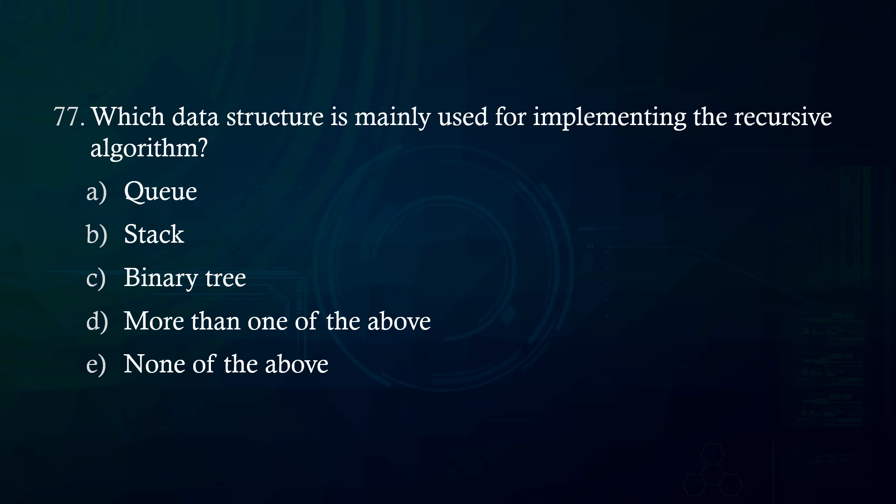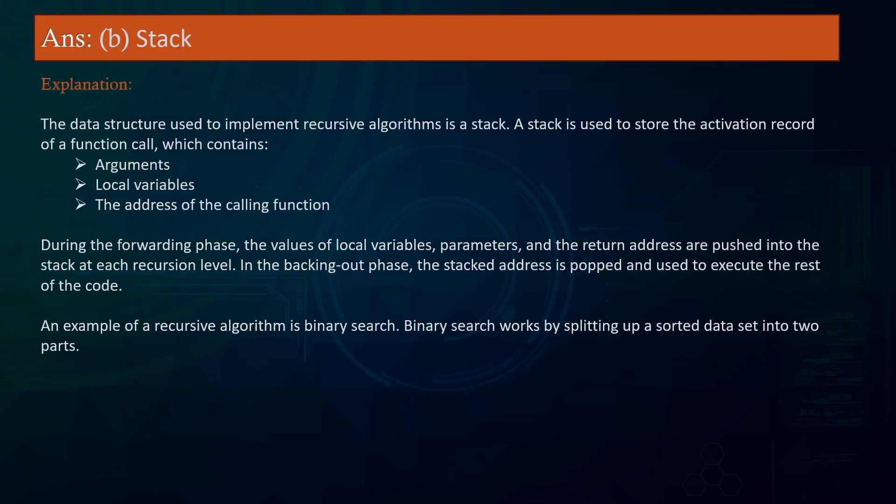Which data structure is mainly used for implementing a recursive algorithm? A. Queue B. Stack C. Binary tree D. More than one of the above E. None of the above. Answer: Stack. A stack is the data structure mainly used for implementing recursive algorithms, as it follows the LIFO (Last In, First Out) principle that mirrors the call-and-return nature of recursion.